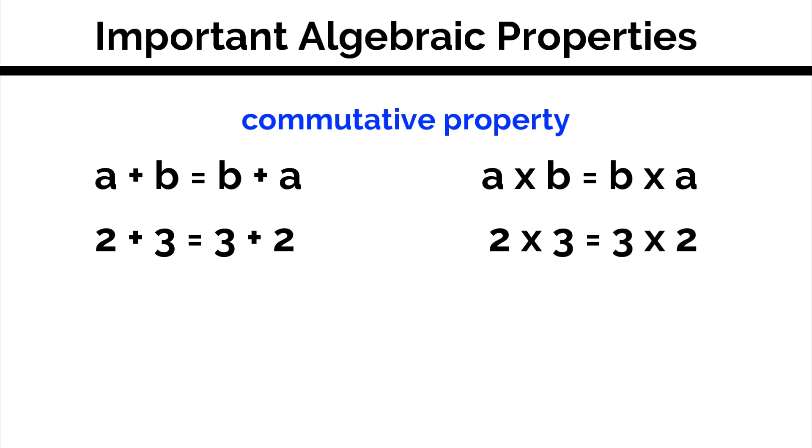If these become algebraic terms, the commutative property applies the same exact way. The order in which we add or multiply algebraic terms is irrelevant. 2x plus 3 is the same as 3 plus 2x. And 2x times 3 is the same as 3 times 2x.